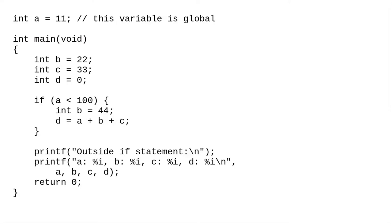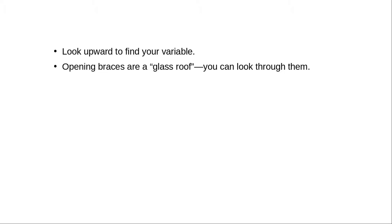Another way to think about scope is from the source code view, using rules to find a variable. Look upward to find a variable declaration. Opening braces are a glass roof. You can look up through them. Closing braces are a metal floor. You can't look through them.